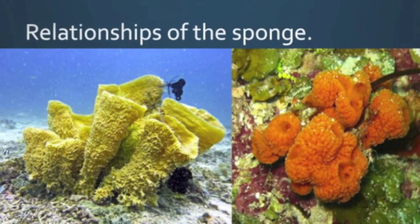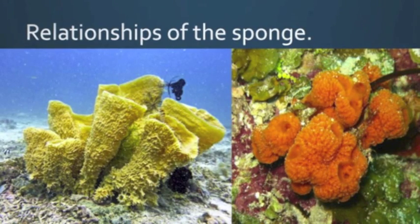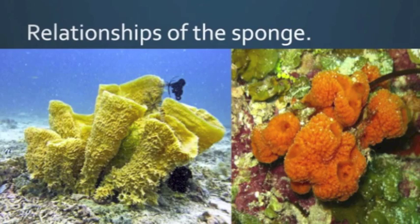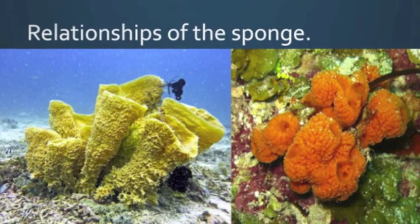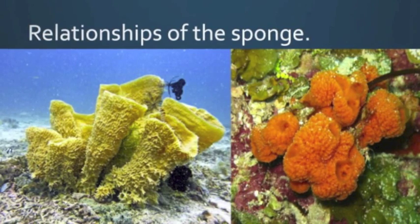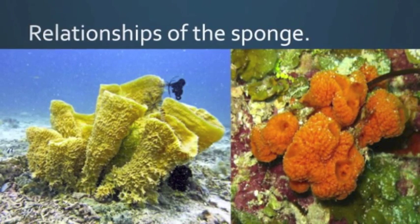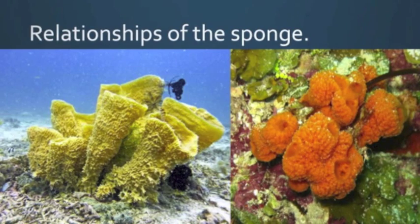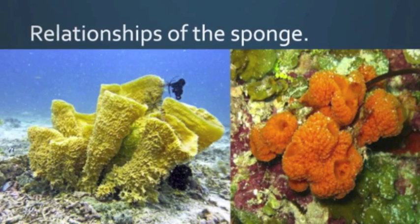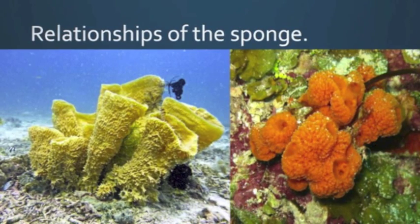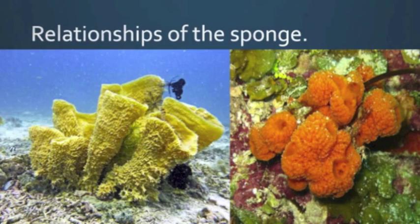Sponges are very simplistic animals. Water flows through them and that's how they get their nutrition. They live on rocks and are attached to them so that water can flow through them easily. They cannot move by themselves, so they reproduce asexually.